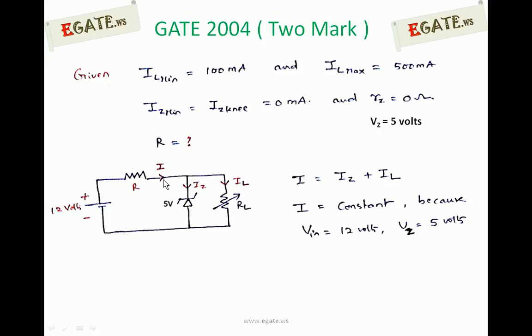Whenever I is equal to constant, if load current is minimum, maximum current should flow through Zener. By that time we can write I equals IL minimum plus IZ maximum.